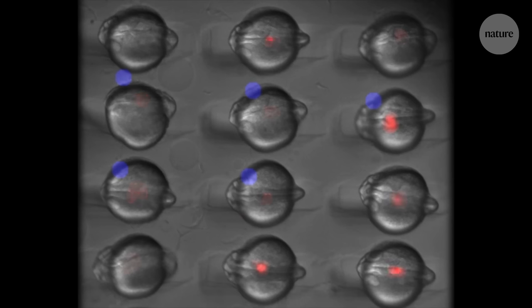Different embryos had different cells that started beating first, and they triggered the cells around them in a wave-like pattern.